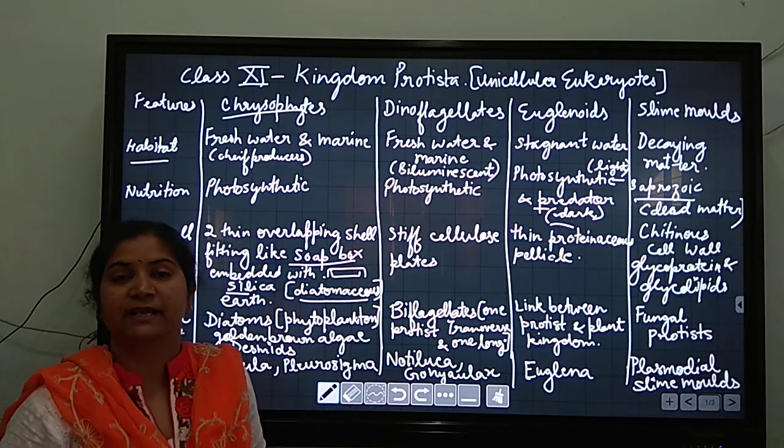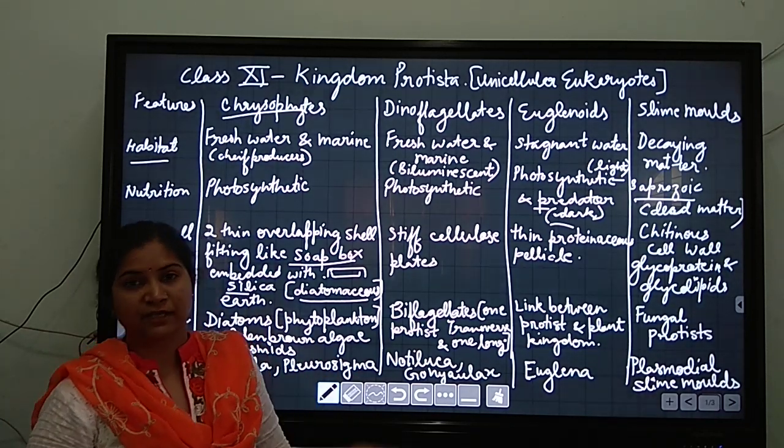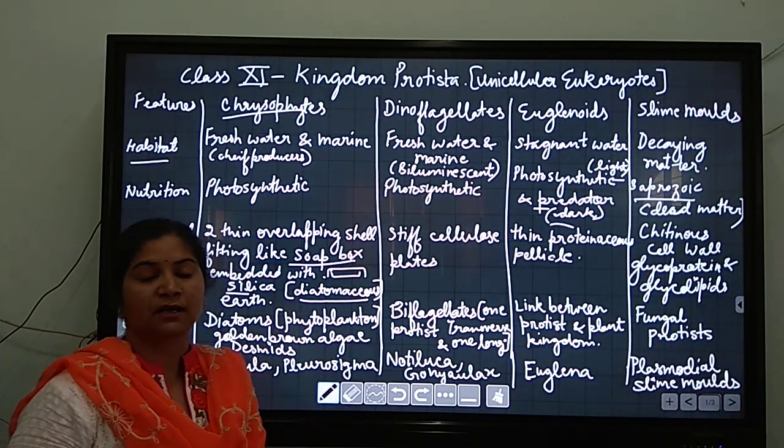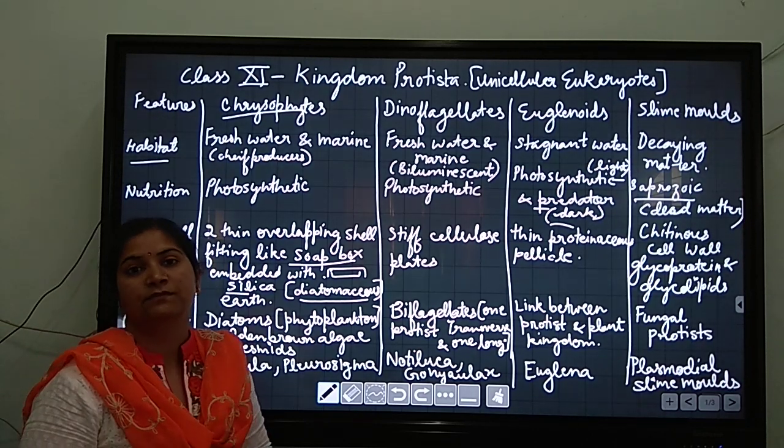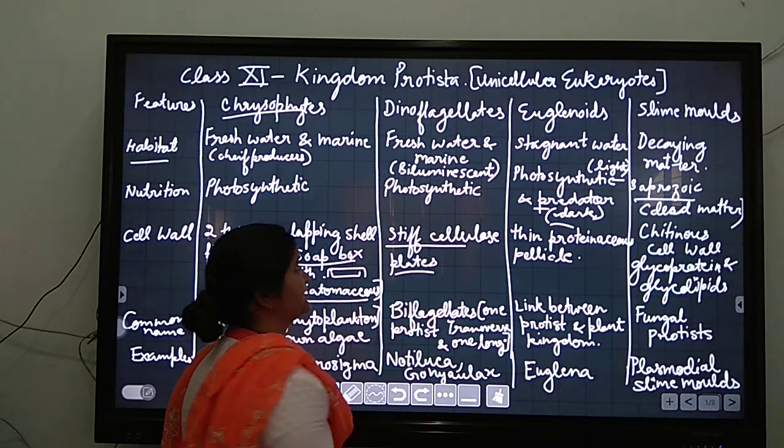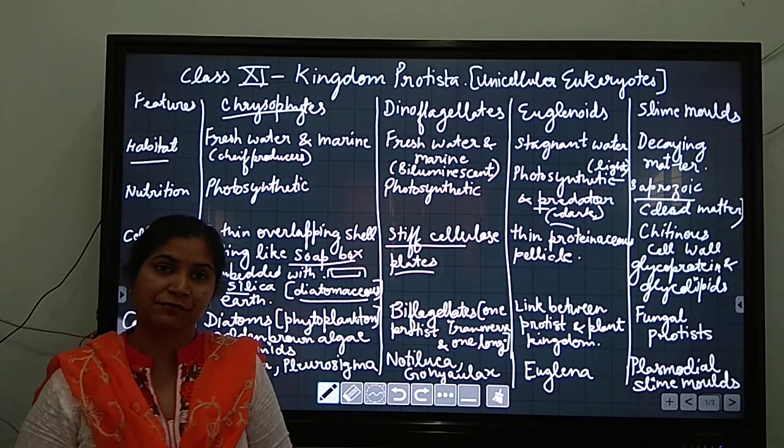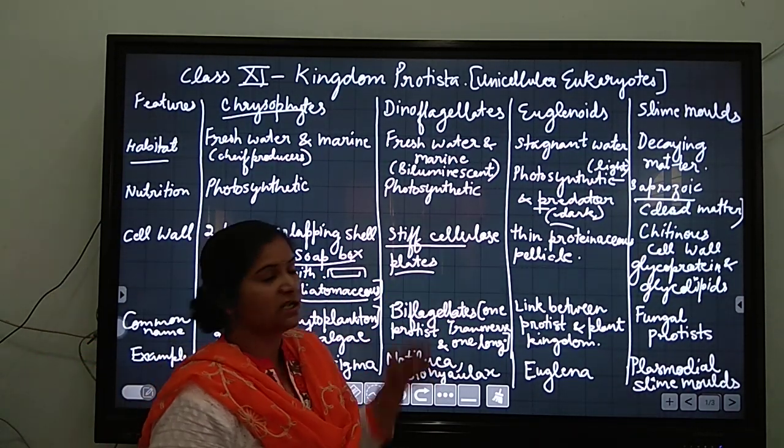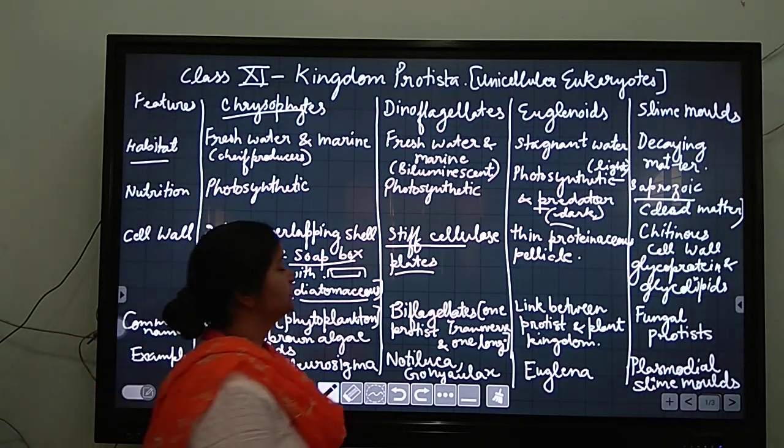This is having various features like it can be used for filtration and for polishing of certain materials. Here the cell wall is of stiff cellulose plates present on the dinoflagellates, and two flagella are the most common feature of dinoflagellates.